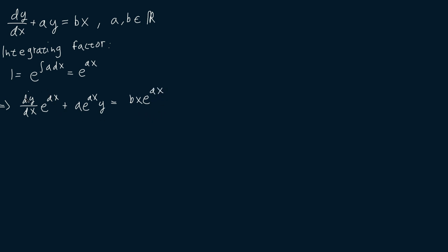Then we notice that the left-hand side of our equation can be written as the derivative with respect to x of y times e to the ax. This comes from the product rule, since the product rule tells us that this derivative would be the derivative of y times e to the ax plus the derivative of e to the ax times y. And this is equal to bx times e to the ax.